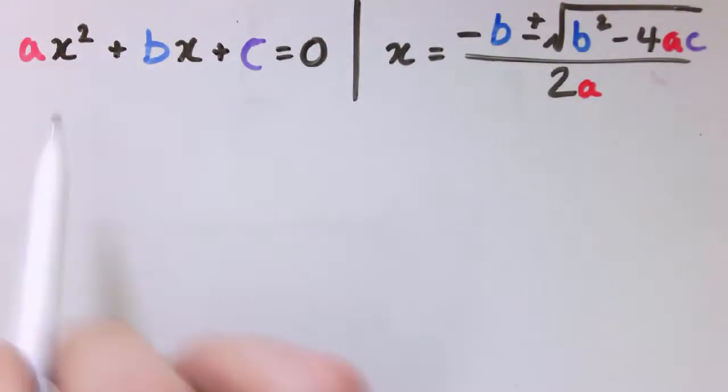It says that for any quadratic equation, ax squared plus bx plus c equals 0, where these are just numbers, the solutions to that quadratic equation are given by this formula. It looks a bit complicated at first, but really we just have to plug the numbers in. So it's minus b plus or minus the square root of b squared minus 4ac, all divided by 2a.